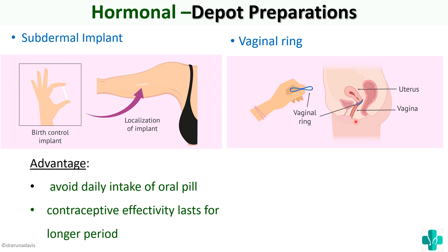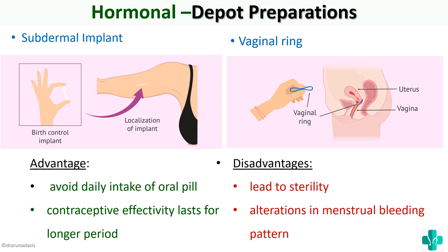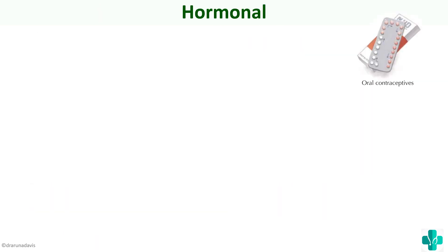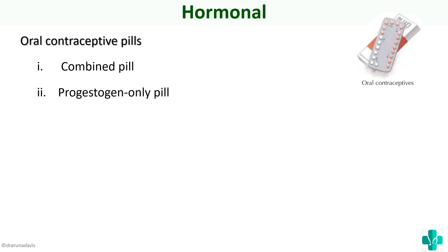A vaginal ring containing the preparation can be kept in the cervical region. The disadvantages of depot preparations are that they can lead to sterility, so they cannot be used as a spacing method, and there can be alterations in the menstrual bleeding pattern. The advantage is that the contraceptive effect lasts a very long time without daily pill-taking. In this video we've covered the combined pill, the progesterone-only pill, the post-coital pill, and depot preparations including injectable, subdermal, and vaginal ring forms.